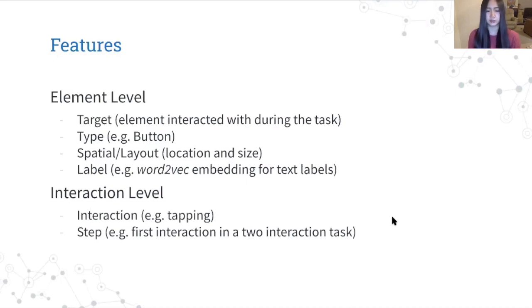Then on the interaction level, we have two different features. We have the type of interaction, because different interactions take different amounts of time, and then a step feature. So our model handles tasks consisting of multiple interactions, and the users have to figure out how to break the task down into individual interactions. And this is a good measure of how intuitive the interface is. So the step feature indicates how difficult a particular interaction is for the user to figure out.